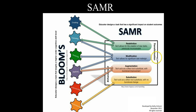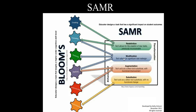When we get up to the transformation levels, the M in SAMR stands for modification, which is when technology is facilitating something that would be very difficult to accomplish without it. I like this model because Bloom's taxonomy levels are also listed here. When we're looking at modification, we're looking at the verbs applying, analyzing, and even evaluating to some degree. Modification would be having students work collaboratively on a document where they're giving feedback to each other and making modifications based on that feedback — that's just one example.